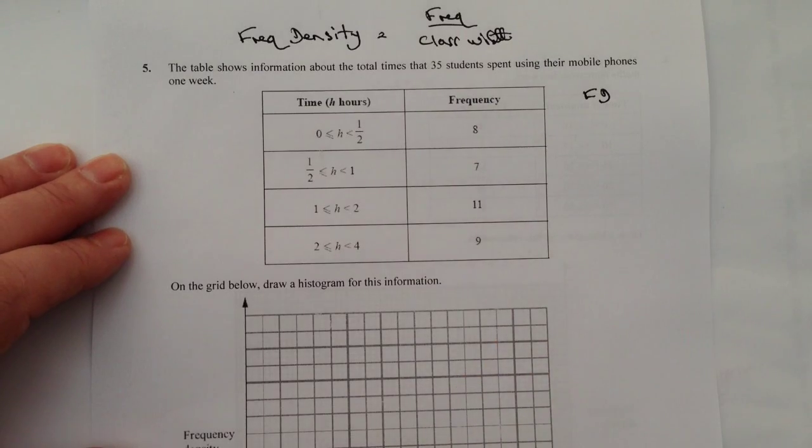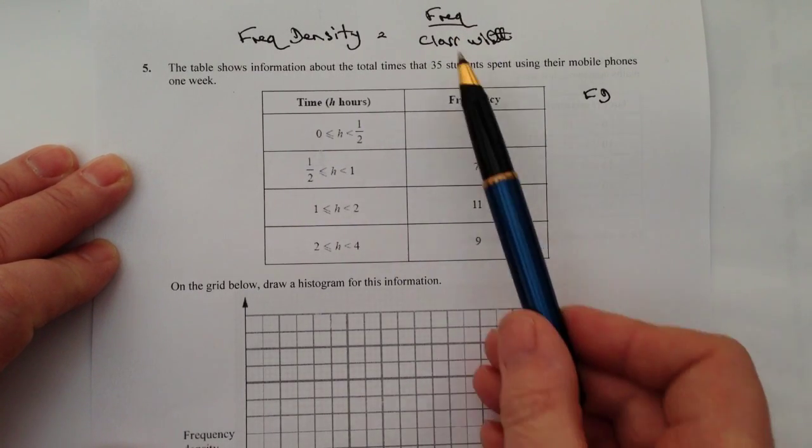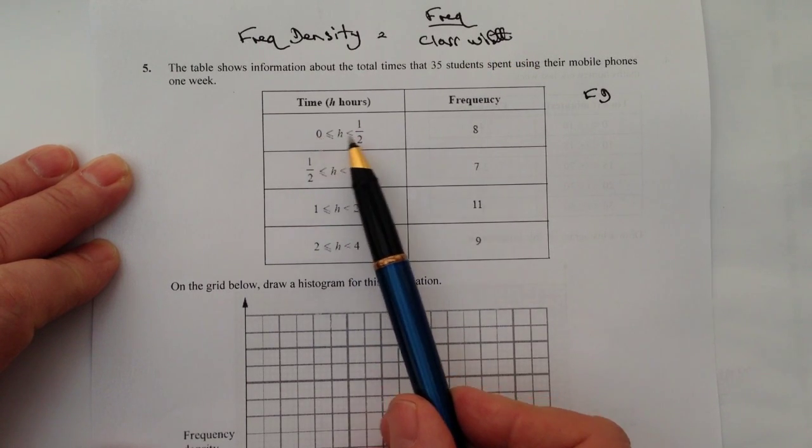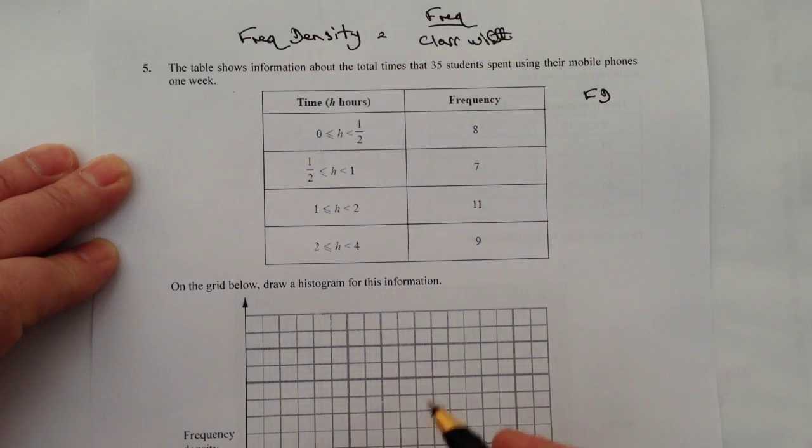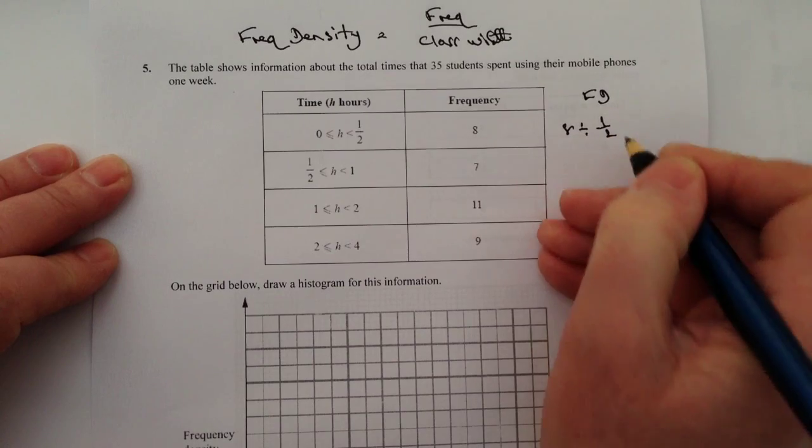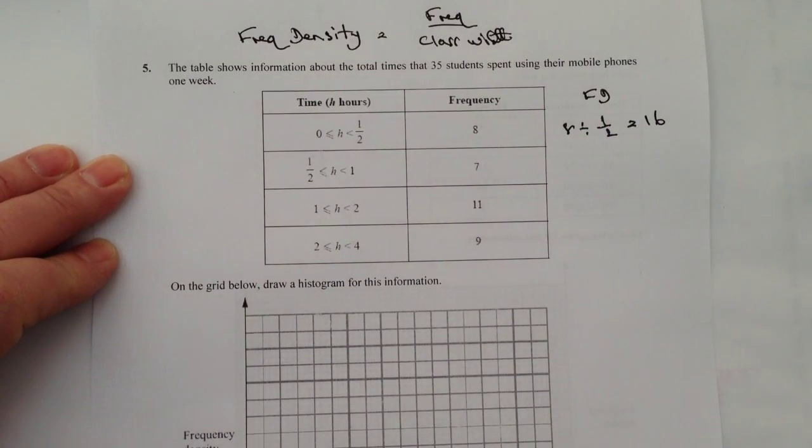That's relatively straightforward because I know the frequency that's been given to me here and I know the class width, which is the difference between, in this case, zero and a half. So the frequency density for the first line is going to be eight divided by a half, and that's going to give me a frequency density of 16.